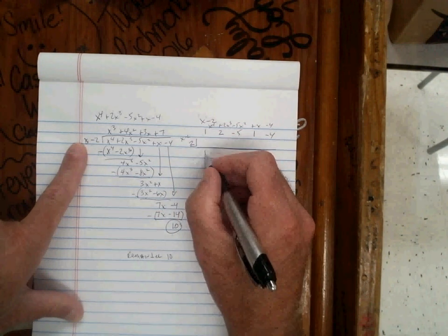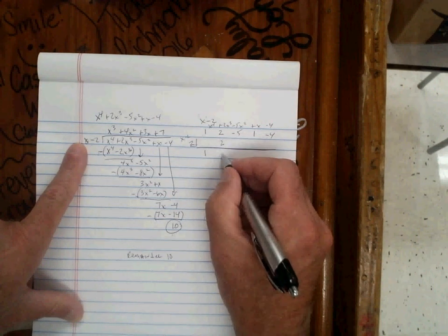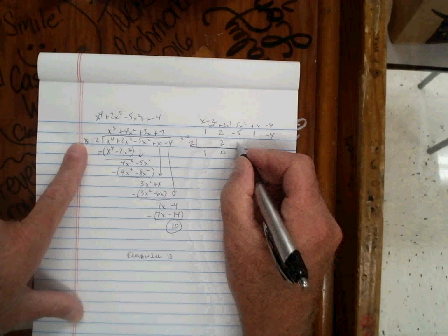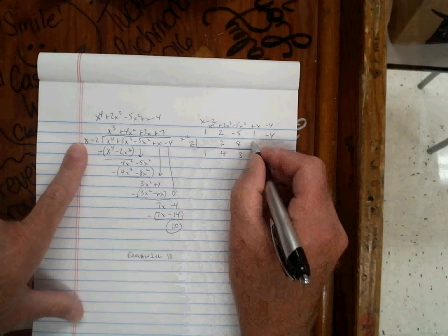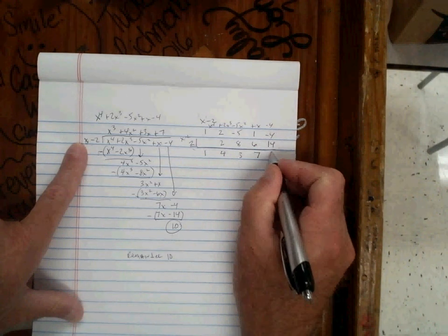I bring down the first coefficient, multiply times what's in the box. Put it here and add. Multiply times what's in the box. Add. Multiply times what's in the box. Add. Multiply times what's in the box. Add.